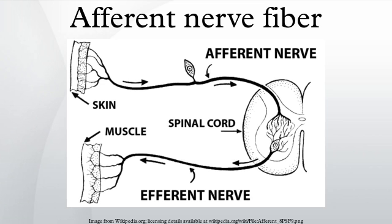Afferent neurons are pseudounipolar neurons that have a single long axon with a short central and a long peripheral branch. These cells do not have dendrites. They have a smooth and rounded cell body.